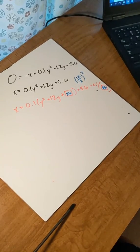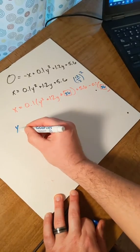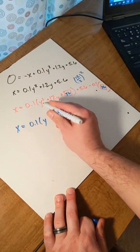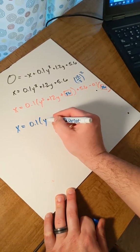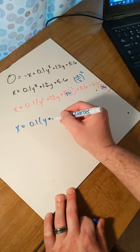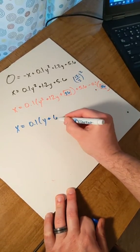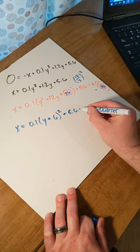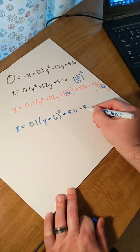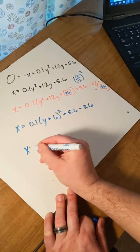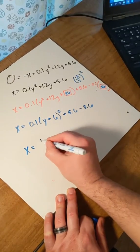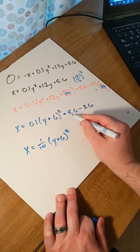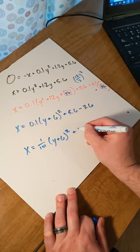So this becomes x equals 0.1 times y — square root of y squared is y — plus is still in the middle, and square root of 36 is 6. Then we've got plus 5.6 minus 0.1 times 36, which is 3.6. So our final equation answer is, writing 0.1 as 1 tenth, it's 1 tenth times y plus 6 squared, and then this over here becomes plus 2.